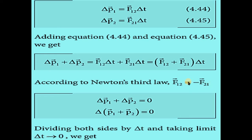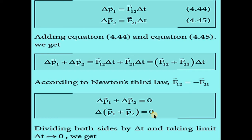According to Newton's third law, F₁₂ vector equals minus F₂₁ vector, because both bodies act in opposite directions on each other. So substituting, F₁₂ cancels with F₂₁, giving zero. Therefore the equation becomes Δp₁ vector plus Δp₂ vector equals zero.